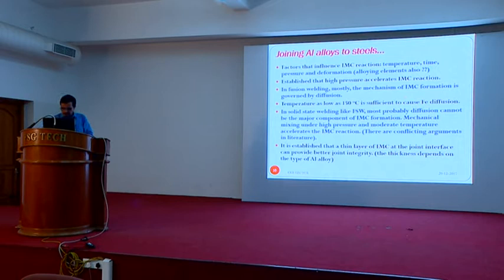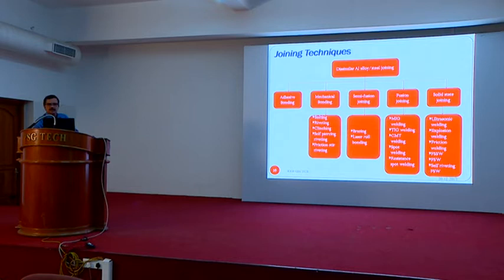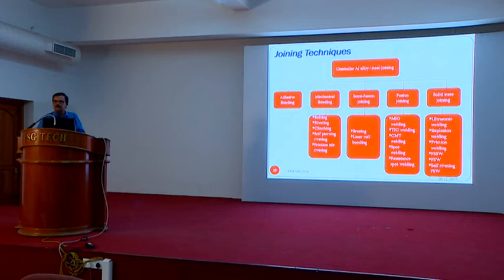Coming to joining techniques: there is some confusion regarding categorization of semi-fusion and fusion joining techniques. Different techniques include adhesive bonding, mechanical bonding techniques — which automotive industries are currently using extensively — along with brazing, laser braze welding, MIG welding, TIG welding, CMT welding, spot welding, and for solid state welding, different techniques are being trialed.